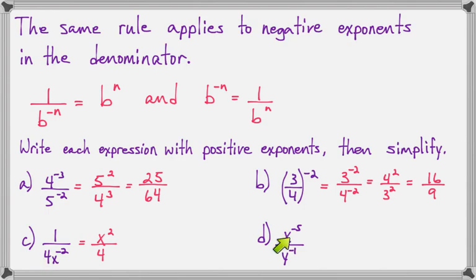Now on part D, both of these have negative exponents, so we'll have to move them both, and that gives us y over x to the 5th.